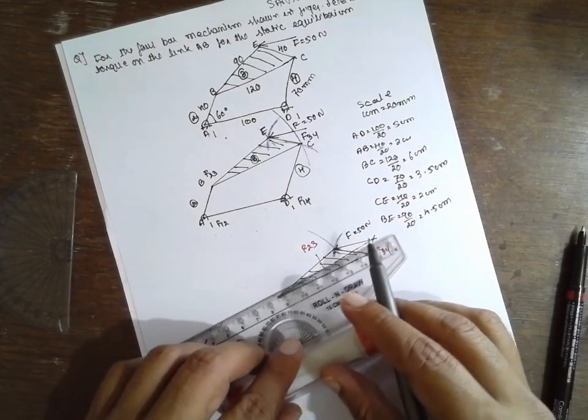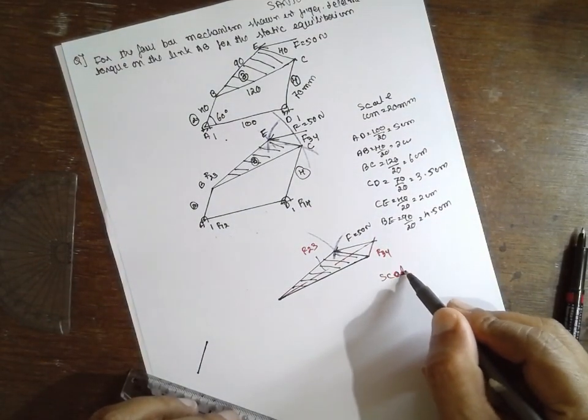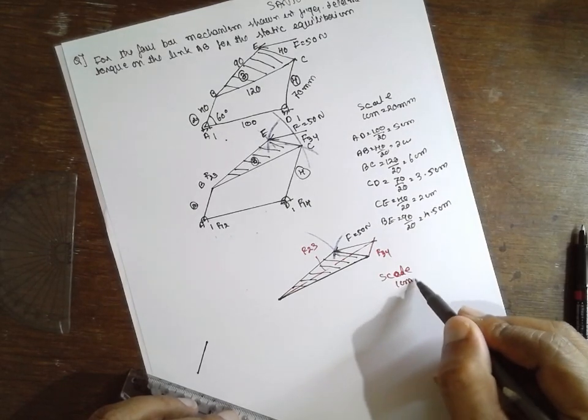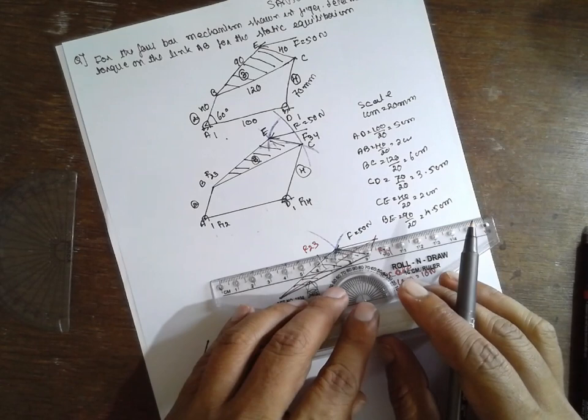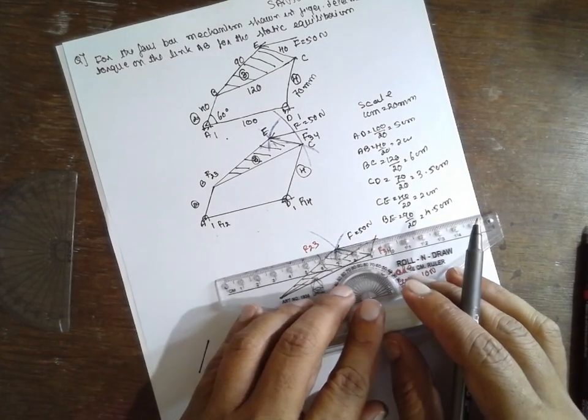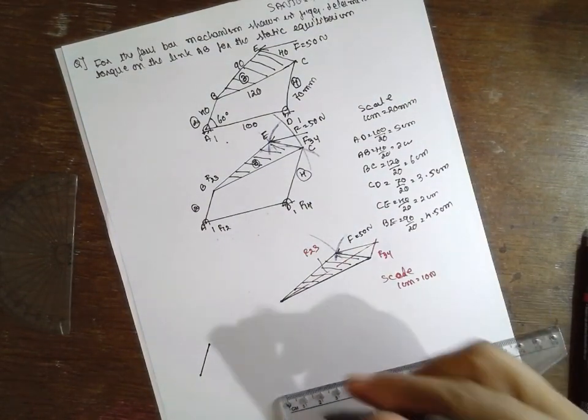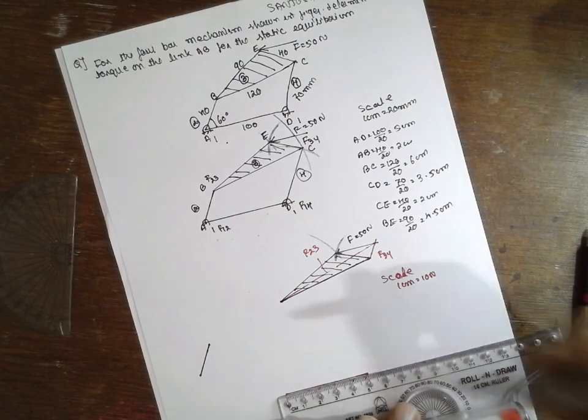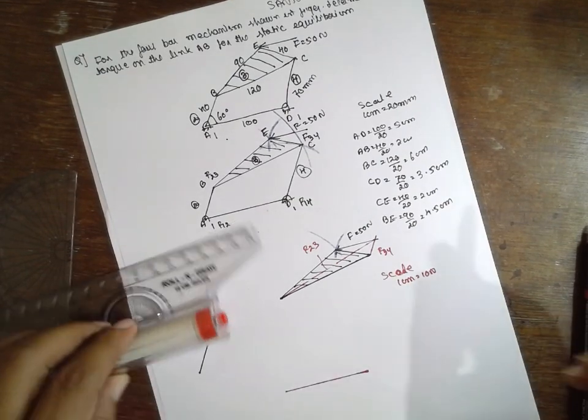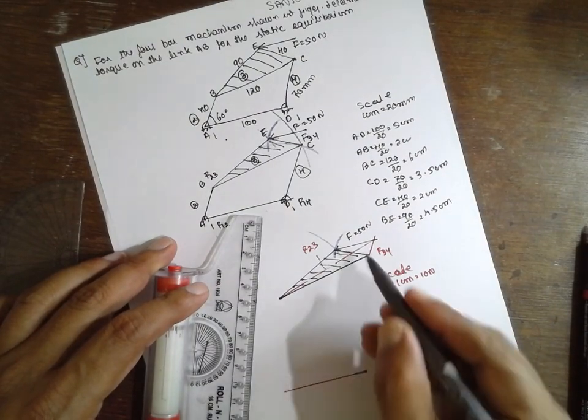First, 50 is there. I will consider a scale, 1 cm is equal to 10 N. That means 50 is nothing but 5, exactly parallel to this one. 5 cm, arrow is here, arrow this direction.